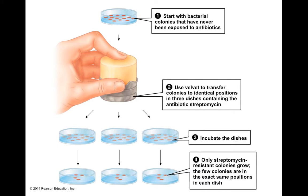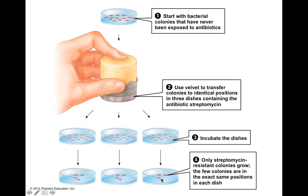A velvet stamp technique demonstrates that evolution can occur. Bacterial colonies never exposed to antibiotics were stamped onto multiple dishes containing streptomycin. Even though all colonies appeared the same, only four colonies remained — the same four in all three dishes — indicating those starter colonies already had resistance to begin with. The bacteria don't see streptomycin and decide to overcome the challenge; the ones unable to overcome it die off, and those able to survive now have free reign of the petri dish.